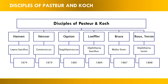Pasteur and Koch trained many students who themselves became fine medical microbiologists and made tremendous discoveries: Hansen discovered the lepra bacillus; Neisser discovered Neisseria gonorrhoeae (gonococcus); Ogston discovered Staphylococcus; Löffler discovered the diphtheria bacillus; Bruce discovered Malta fever caused by Brucella; and Roux and Behring discovered diphtheria toxin.